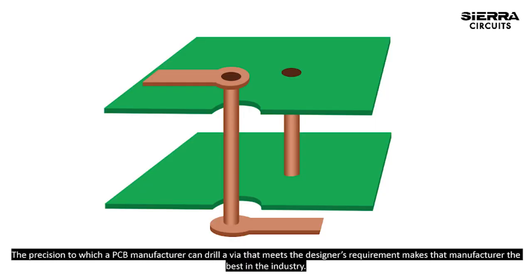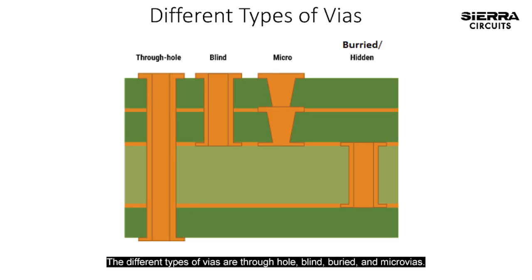The precision to which a PCB manufacturer can drill a via that meets the designer's requirement makes that manufacturer the best in the industry. The different types of vias are through hole, blind, buried, and microvias.